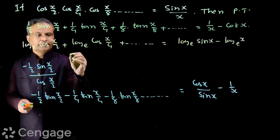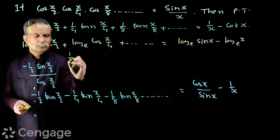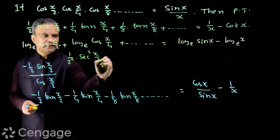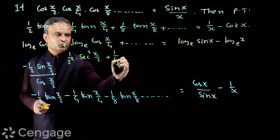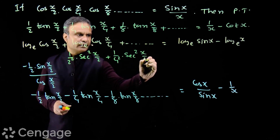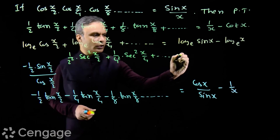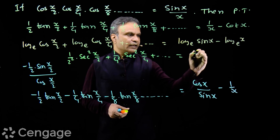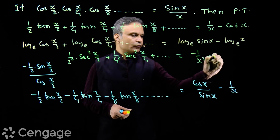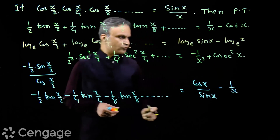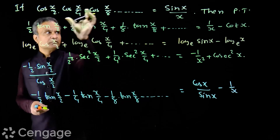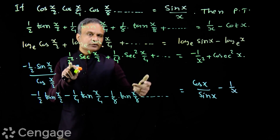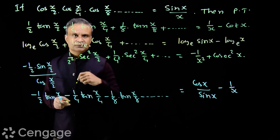If the question asks to find the sum of a sec² series, we differentiate the identity again with respect to x: 1/2²·sec²(x/2) + 1/4²·sec²(x/4) + ... = -1/x² + cosec²(x). This requires differentiating the identity two times.